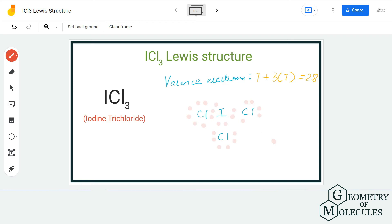It can accommodate these electrons, and hence this is the Lewis structure for ICl₃.